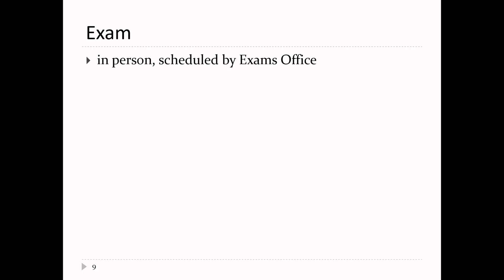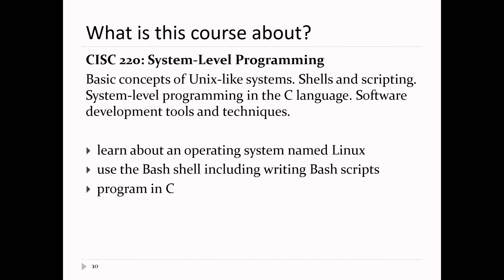A student asks what the first point of reference for textbooks should be. The Jupyter notebooks are first and foremost. Those two textbooks linked on the library's website are actually quite good — a lot of the course material is also referenced in those books. The C book in particular is quite good, and the Bash book is very easy to read as well.